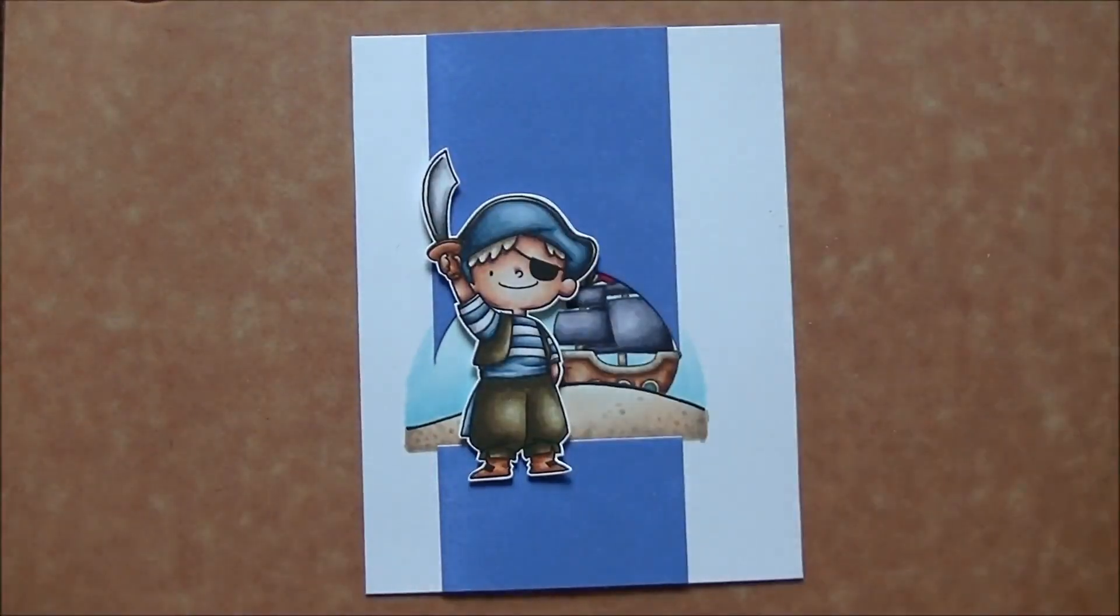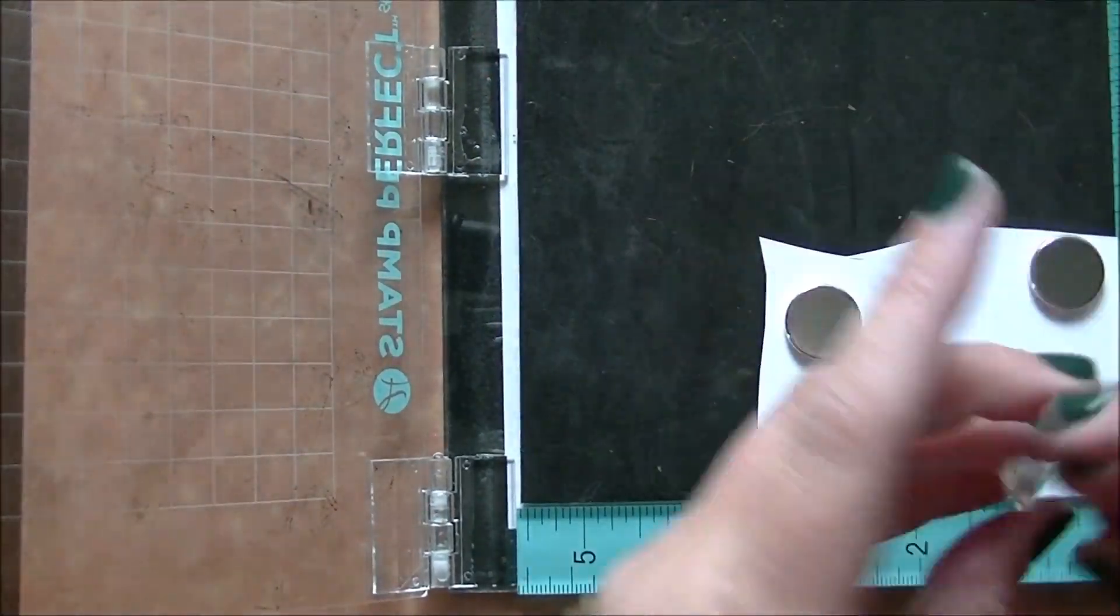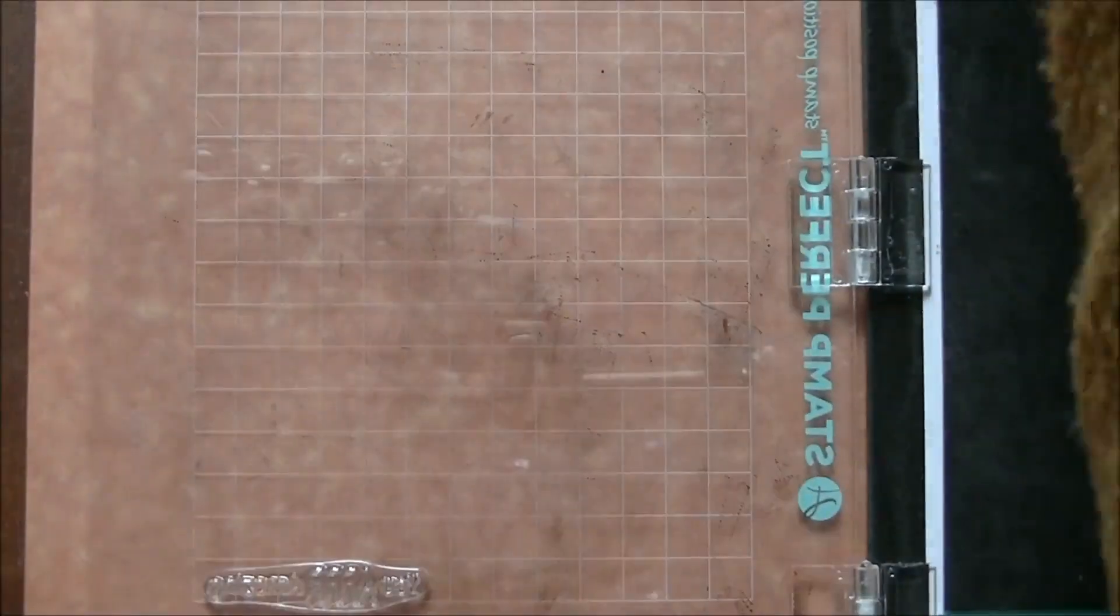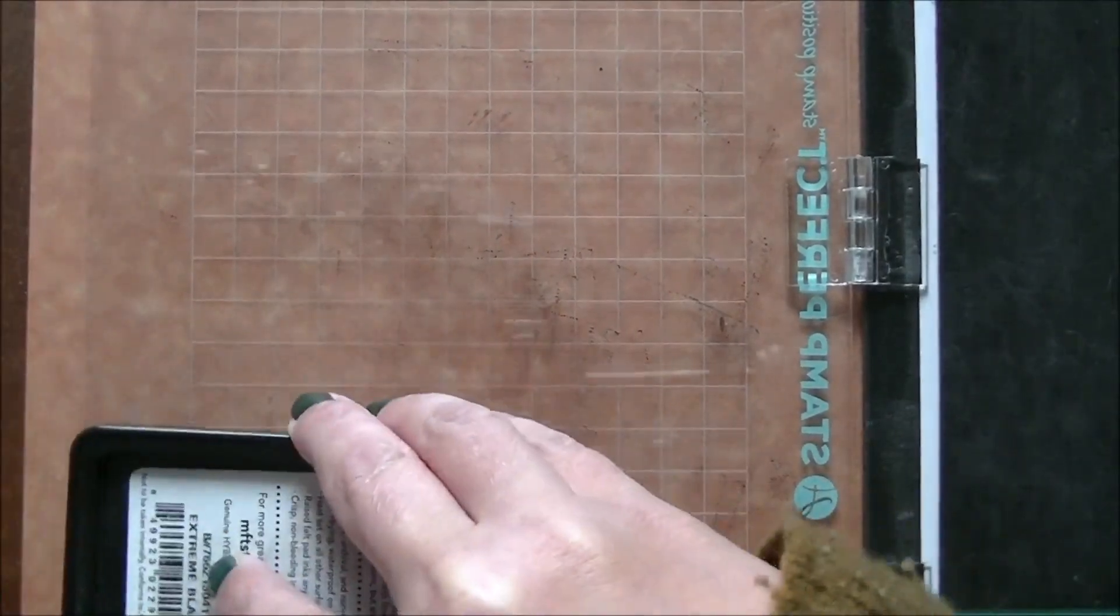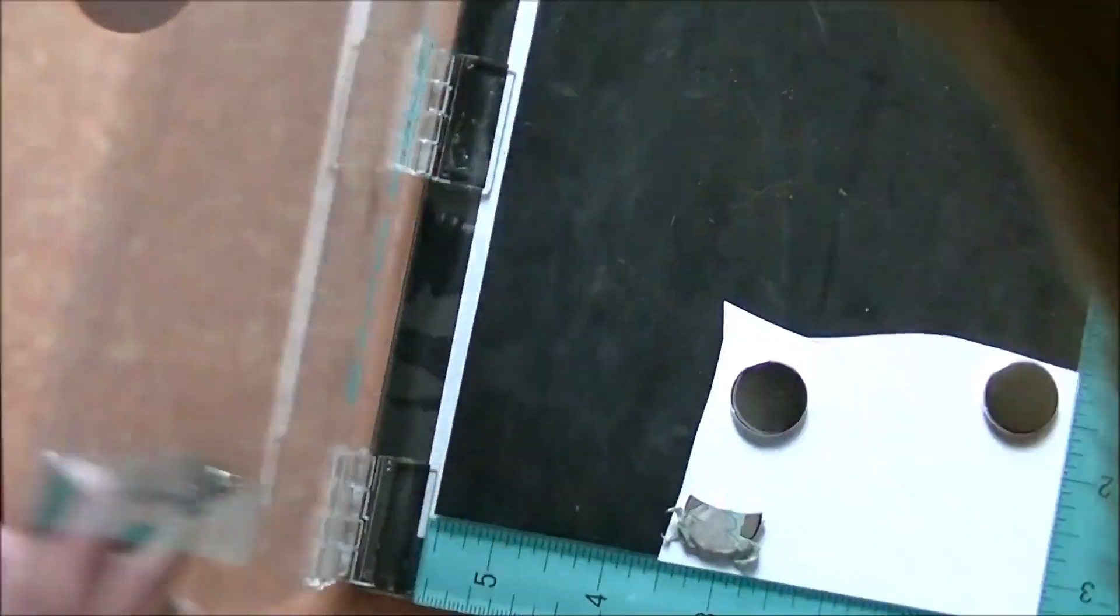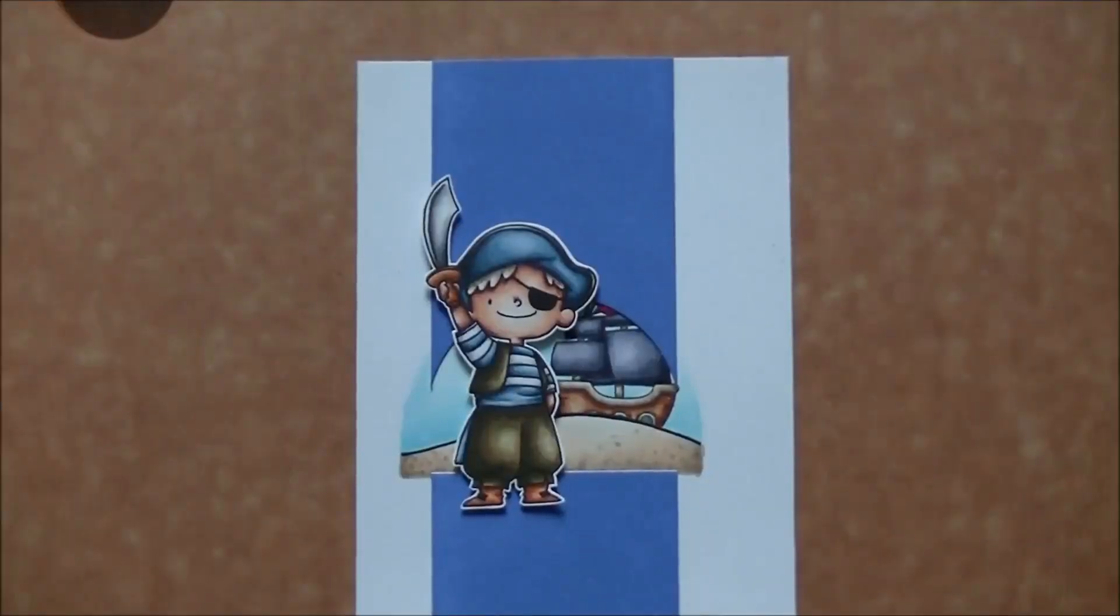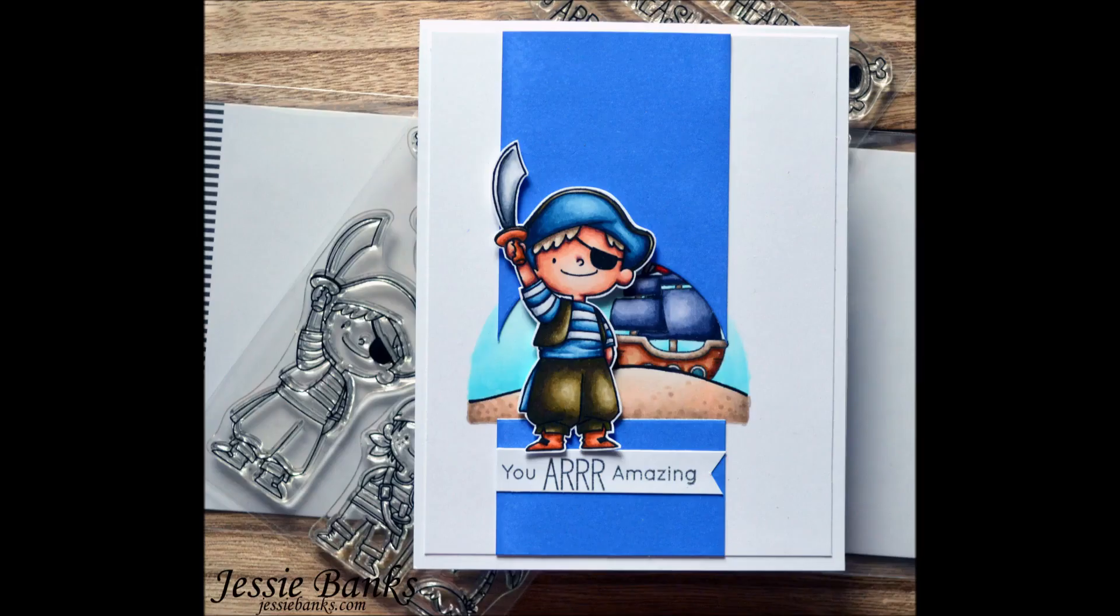We'll tape that down and then I'm just going to trim both those sides off. And now we've got foam tape on the back of our little pirate here and I stamped out this You Are Amazing sentiment again from the same stamp set and I'm going to turn that into a little banner to put underneath of his feet just to give him something to stand upon on the card. And that will be it for this card. So all of the links to everything are in the description box below. If you aren't subscribed to my channel I would love for you to subscribe. I'll see you guys very soon, bye for now.